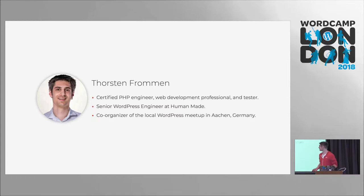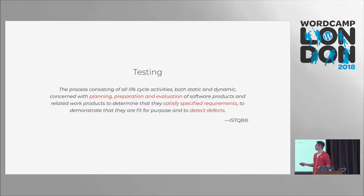Before we start with unit testing, let's have a look at a few related things. Testing in general — what is testing? This is the definition from the ISTQB, the International Software Testing Qualifications Board. So this is the definition of software testing in general. I highlighted three things here: testing is about planning, preparation, and evaluation of our software, and what we're interested in is if they specify the requirements — if they satisfy the requirements.